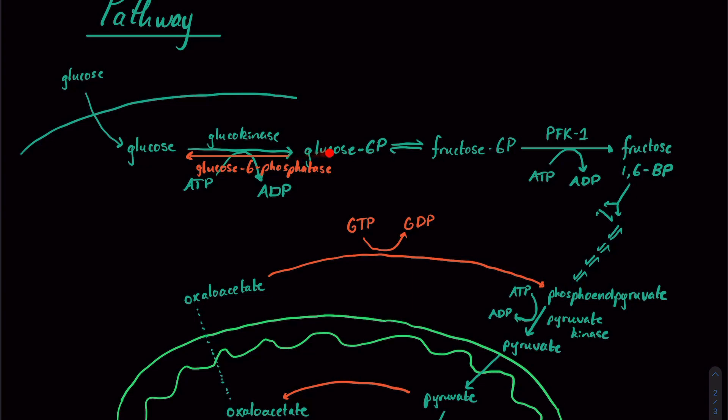Next, glucose-6-phosphate will be converted via an isomerase to fructose-6-phosphate. Then fructose-6-phosphate will be converted to fructose-1,6-bisphosphate. Then we have to ask ourselves, what enzyme is going to help this run in reverse? And that's going to be another phosphatase. So fructose-1,6-bisphosphatase.